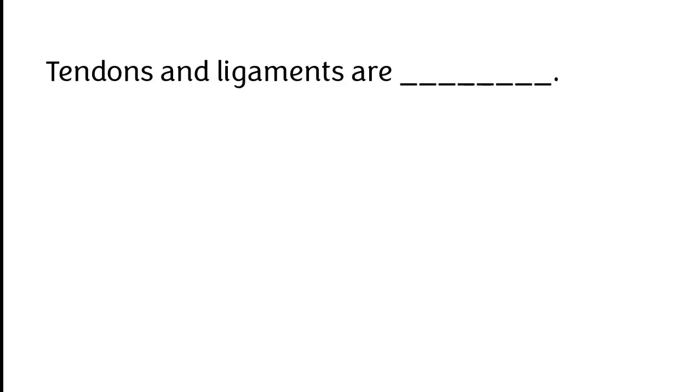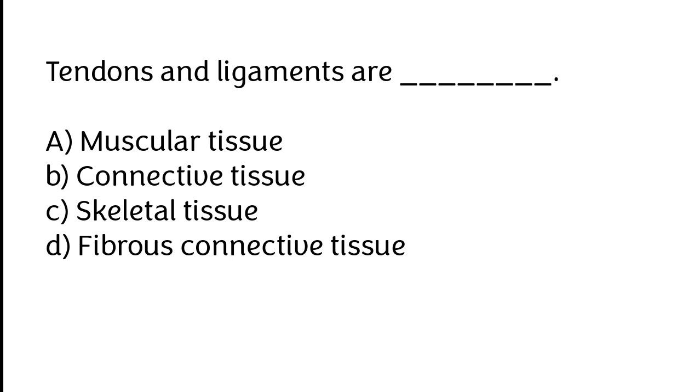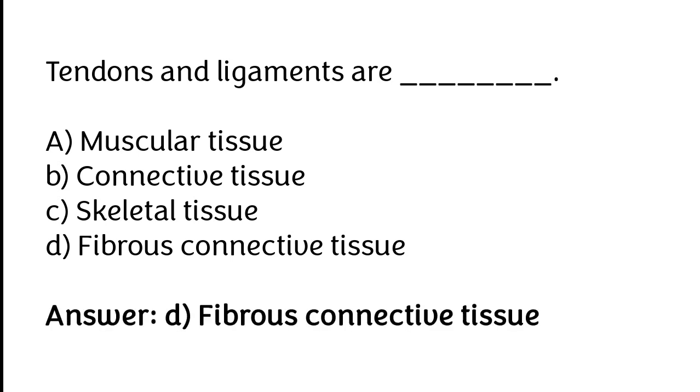Tendons and ligaments are muscular tissue, connective tissue, skeletal tissue, or fibrous connective tissue. The correct answer is option D. Tendons and ligaments are fibrous connective tissue.